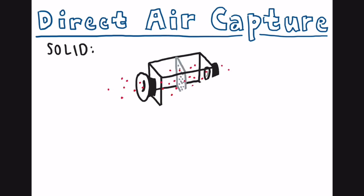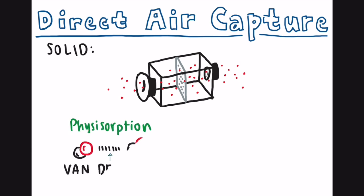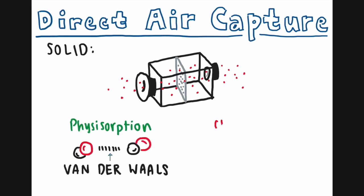In the solid system, carbon dioxide is removed by binding CO2 molecules to solid sorbent filters. The binding may occur through physisorption, where intermolecular van der Waals forces are used, or chemisorption, where covalent bonding is used.